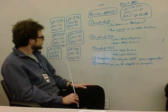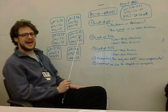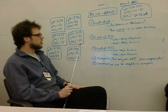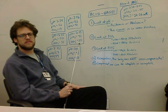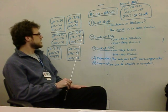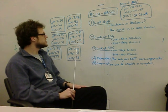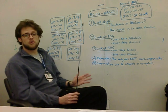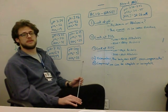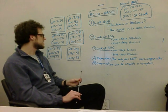Next: pH 7.39, pCO2 41, bicarb 25. The pH is in the normal range, pCO2 is in the normal range, and bicarb is in the normal range. This is a normal arterial blood gas — nothing wrong with this patient, at least not in terms of the arterial blood gas.